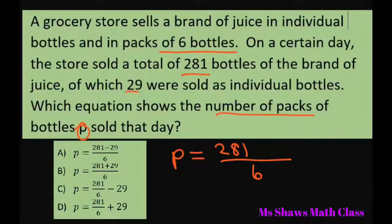But you have to subtract the 29 that were sold. Alright, so that would equal 42.